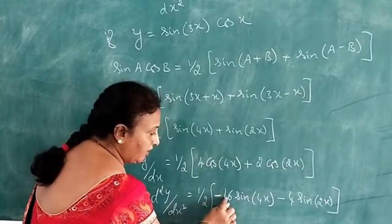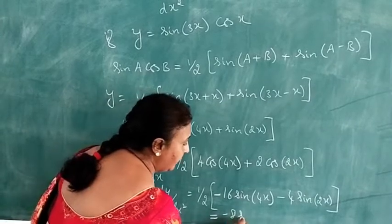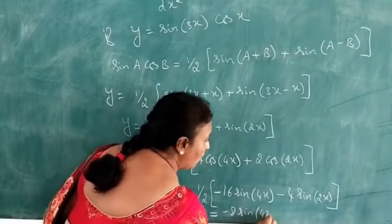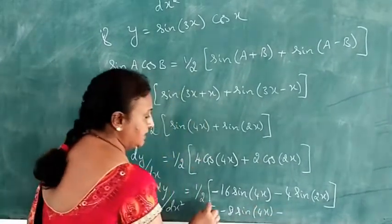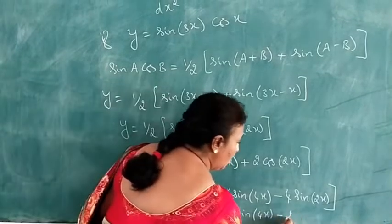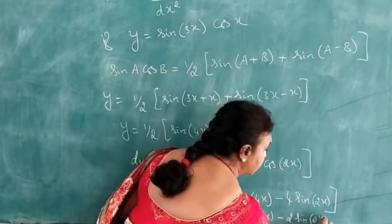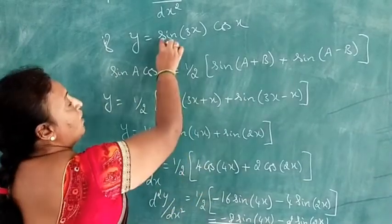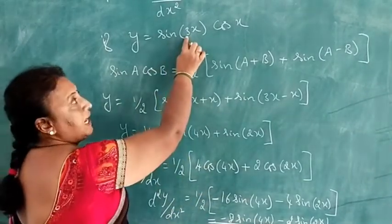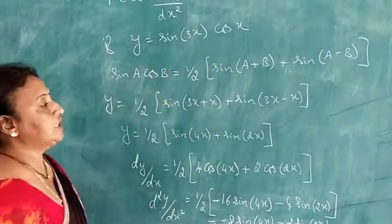Therefore d²y/dx² equals minus 8 sin 4x minus 2 sin 2x. This is the second order derivative of y equals sin 3x into cos x.